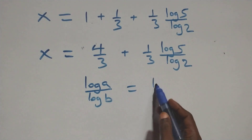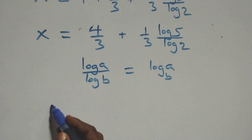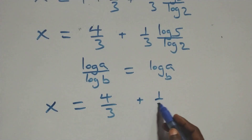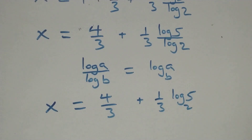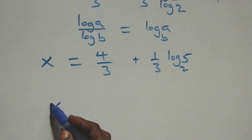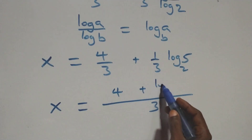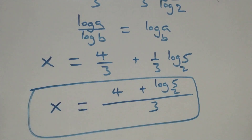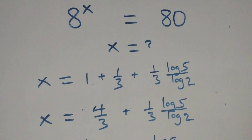Then we apply the change of base rule, where log a over log b is the same as log a to base b. So we have x equals to 1 plus 1 over 3 plus 1 over 3 times log₂5, which simplifies to x equals to 4 over 3 plus 1 over 3 log₂5. Bringing this together as a single fraction gives x equals to (4 plus log₂5) over 3.